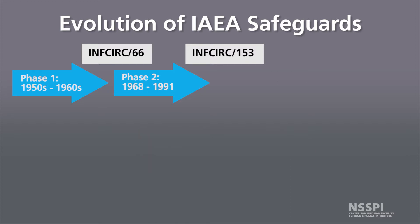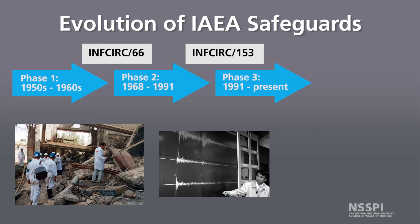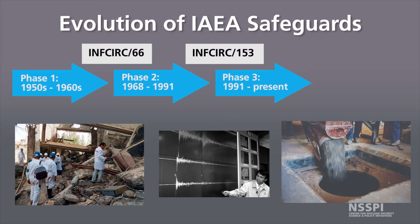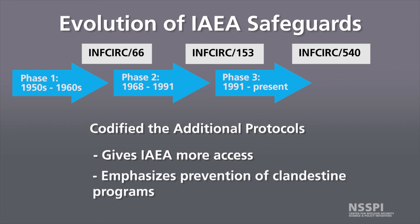Then in 1991 there was another revision to the safeguards system. This came about due to the clandestine nuclear weapons program in Iraq, problems in applying safeguards in North Korea, and the experience gained in verifying the denuclearization of South Africa. This is embodied in Information Circular 540, which codifies what's known as the Additional Protocols, giving the IAEA greater access to facilities within a state and emphasizing the prevention of clandestine programs and verification that there is no proliferation activity elsewhere in a state beyond its declared nuclear facilities.